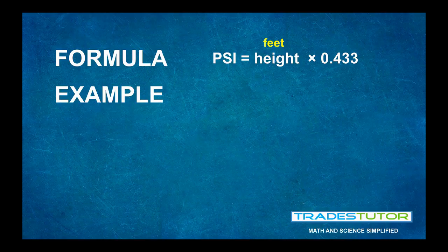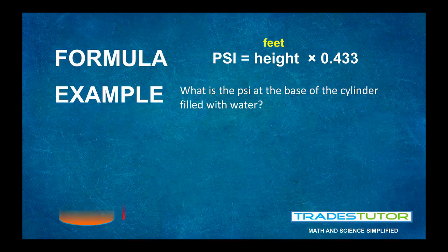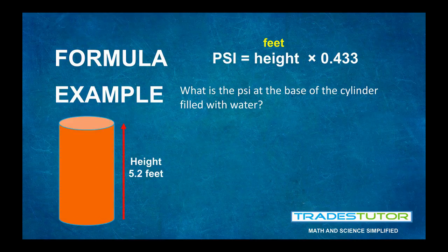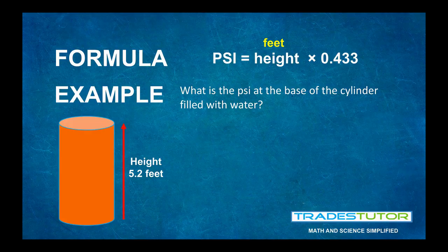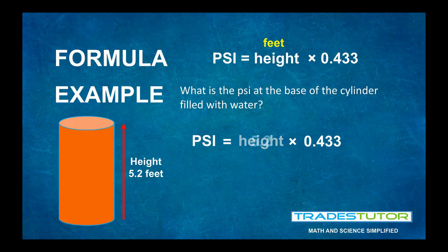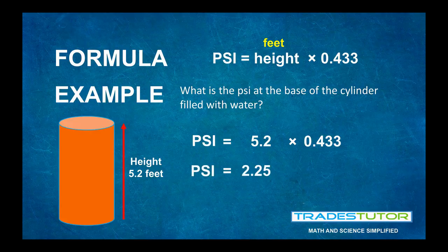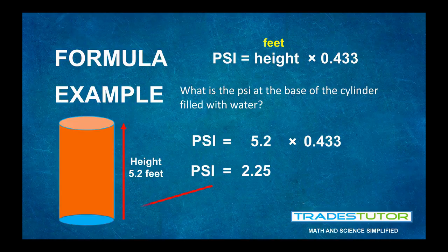So, if we go through a quick example here. What's the PSI at the base of a cylinder filled with water? Say like a hot water tank or something like that. And if we say the cylinder is 5.2 feet in height. We'll throw down our formula. Change out the height for the 5.2. And what we find at the base of that cylinder on every square inch, we get 2.25 pounds. Or 2.25 pounds per square inch down there at the base of that cylinder.